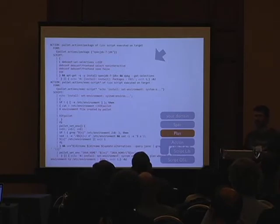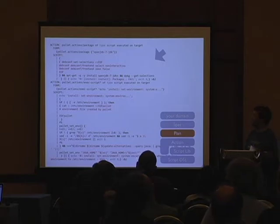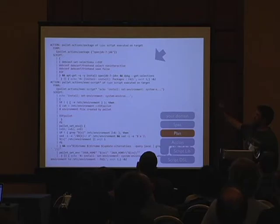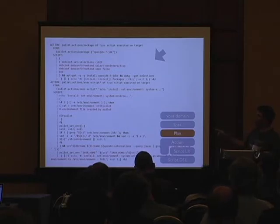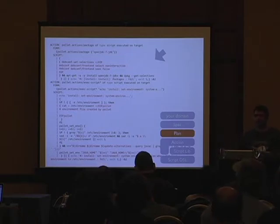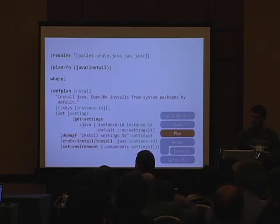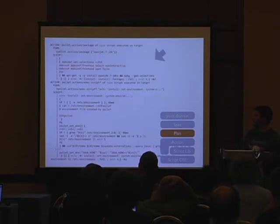Pallet creates a plan before executing it. You can actually interrogate Pallet and ask how it would install Java on, say, Ubuntu. What it prints out is, in this case, two actions. One installs the package files on the system — if you know Ubuntu, this is code to set up the package manager to use some repository and then call the package manager to install. The second action sets up the local environment on the machine so that when you log in you get the right Java version. This is a much lower level of abstraction — this is where the plan gets converted to shell scripts. You can interrogate Pallet and say, what would you do if we called this function?